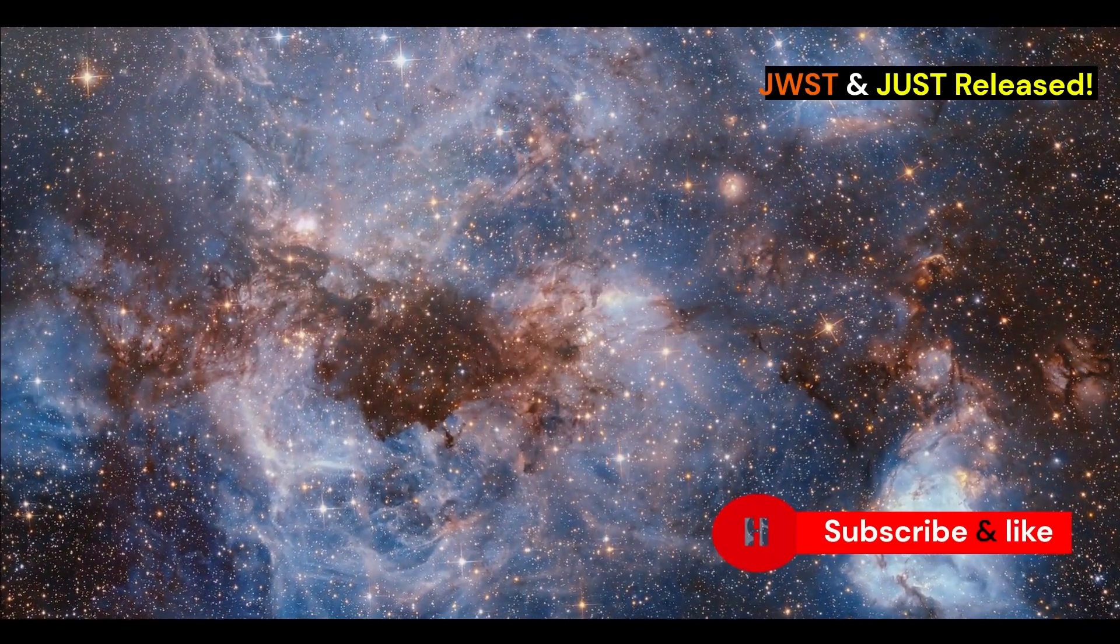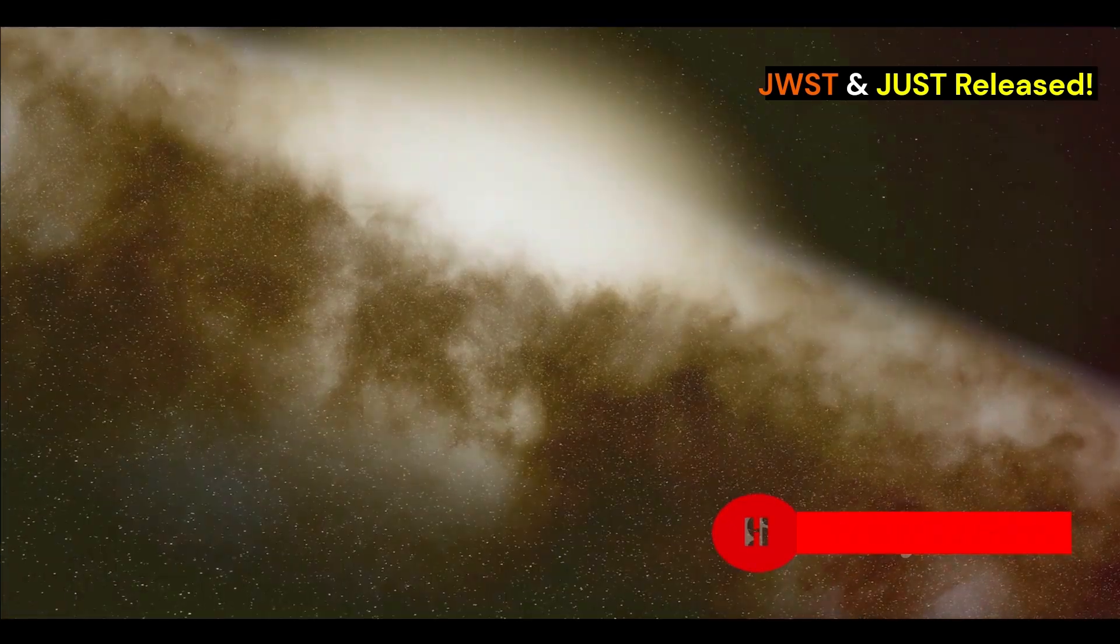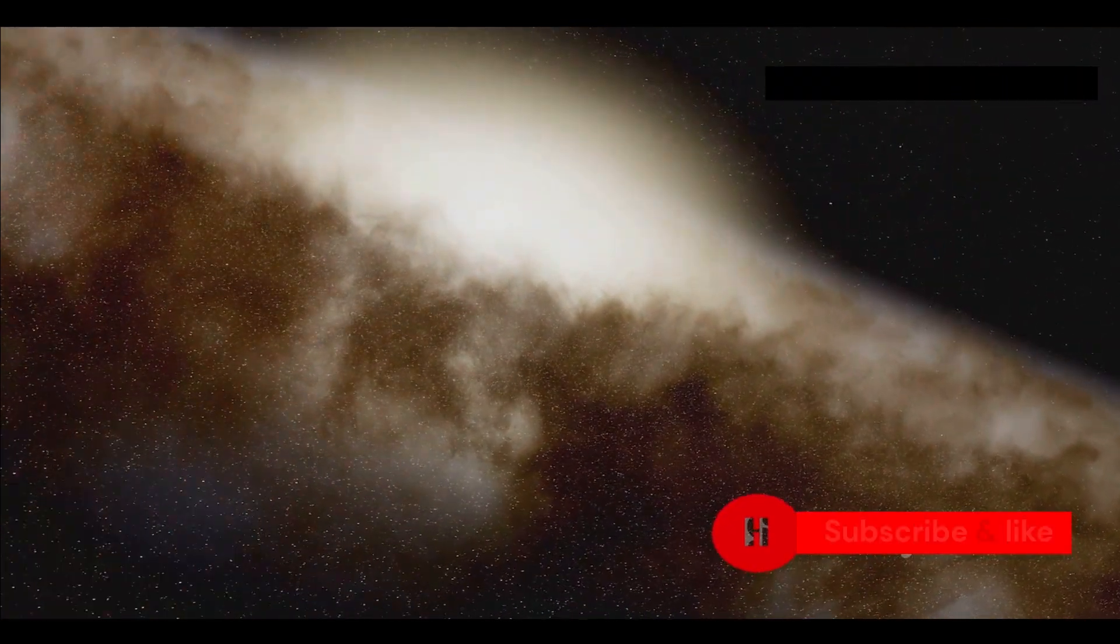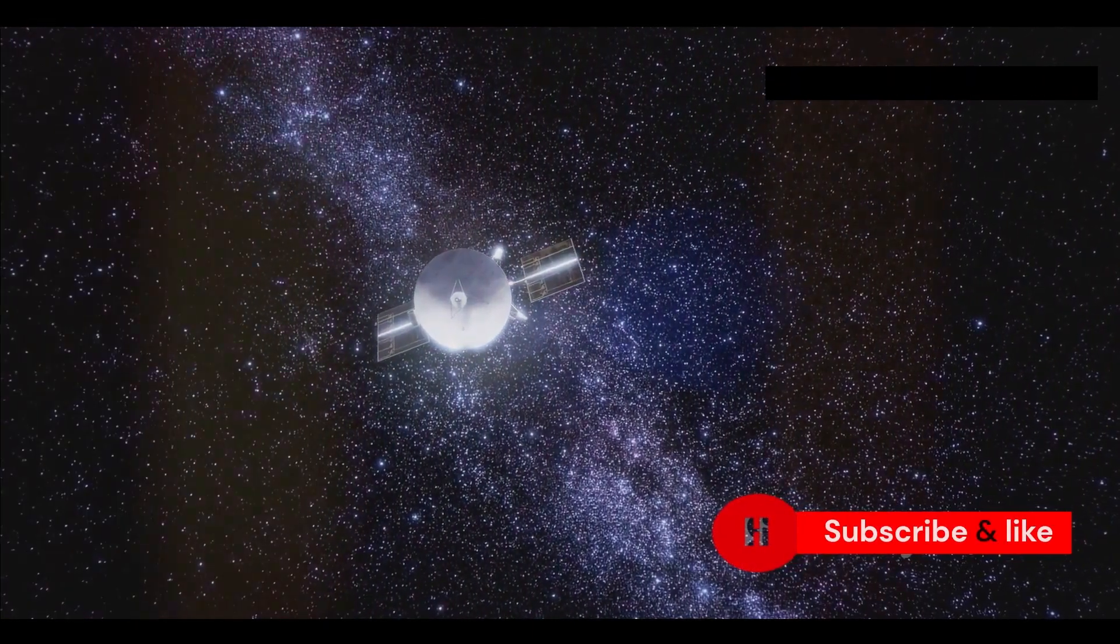By studying the light passing through the air of exoplanets, JWST can find certain molecules that might mean there's life there. These molecules include oxygen, methane and water vapor.